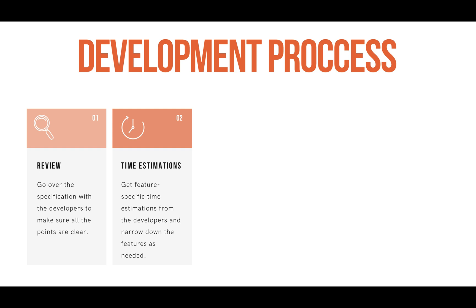After you get the time estimations, this is where you choose and refine your MVP — deciding which features to include or remove based on the developers' time estimates. This is also where you might change some features to reduce the estimated time. A lot of the times you're asking for something that you think won't take much time but it does, and it's not necessarily important for the first launch. So many times you'll be able to redesign the feature in a way that's much faster to develop and provides pretty much the same value for the merchants.